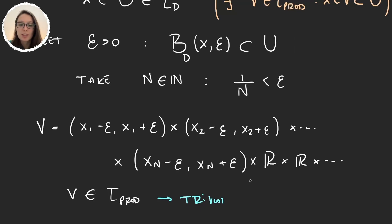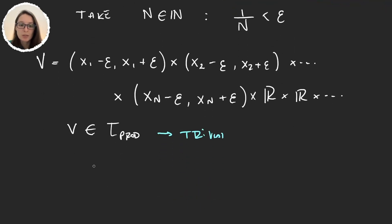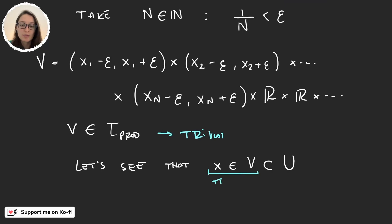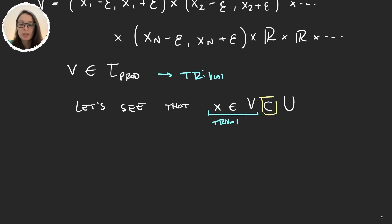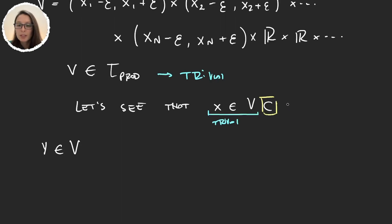Now we need to verify that X is an element of B and B is a subset of U. That X is an element of B is trivial, because xᵢ is in each of these intervals for i from 1 to N, and all remaining coordinates are in the real numbers. So all coordinates of X will be in there. To prove the inclusion B ⊆ U, we will show that B is a subset of the ball, which is itself a subset of U.